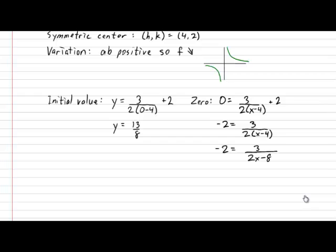Now, cross-multiplying, this will produce negative 4x plus 16 is equal to 3. Shifting the 16 over, we get negative 4x is equal to negative 13.